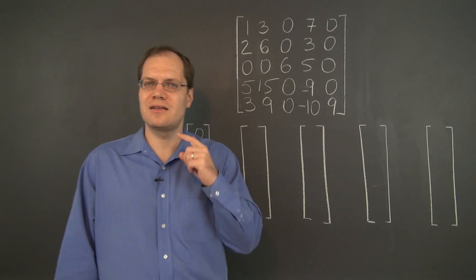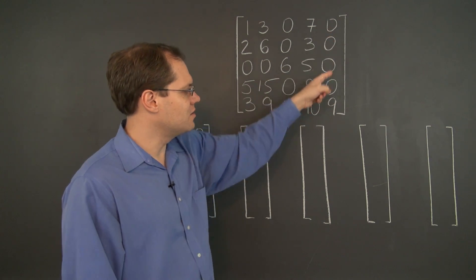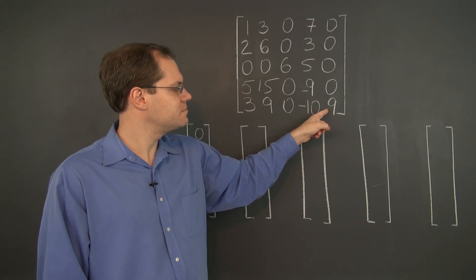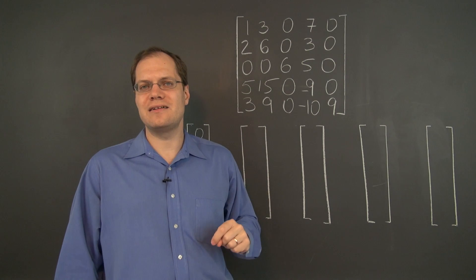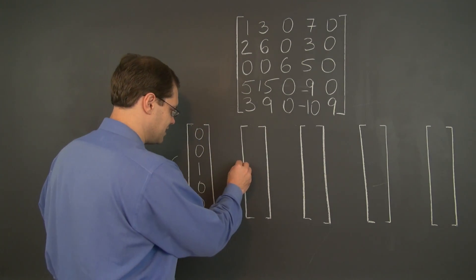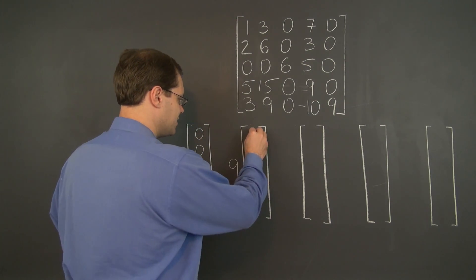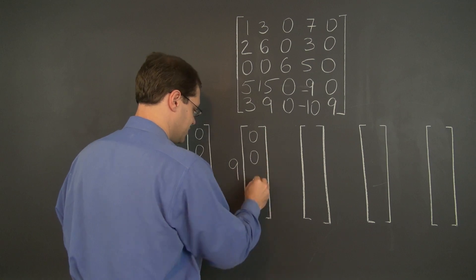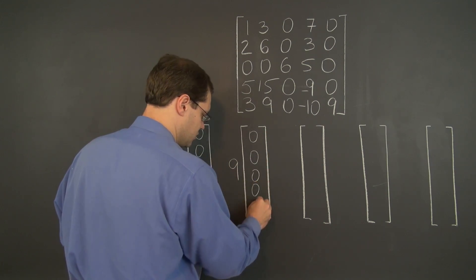There is another one like that and it's this 9 alone in its column and in the diagonal position. So another one is 9 and the corresponding eigenvector is 00001.